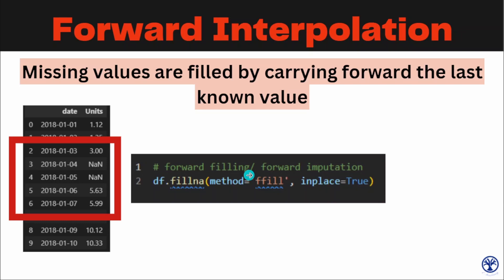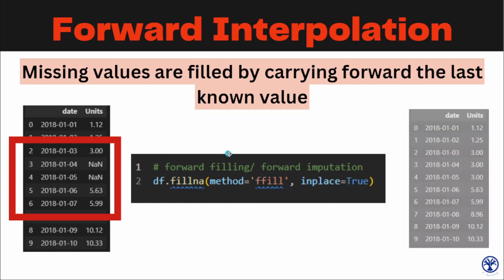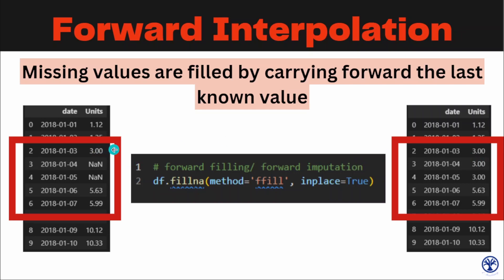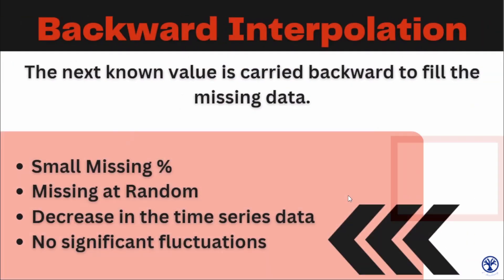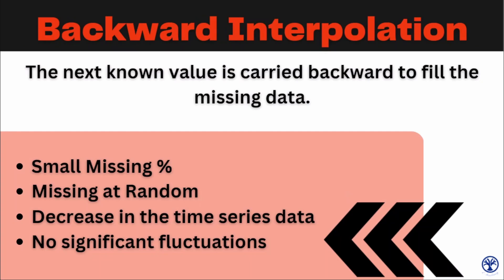We can do forward interpolation with a simple command in pandas — no need to import any other library. The command is: dataframe.fillna(method='ffill'), and then update the data frame. For example, if the value at the second ID is 3 and subsequent IDs are null, forward filling replaces them with 3, the last known value. There is no rocket science in using forward interpolation in Python.